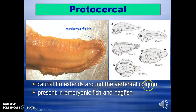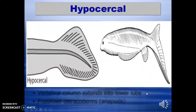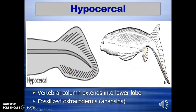Here you can see some of the types. Hypocercal is another type — here the dorsal tail lobe is short while the ventral region is extended, meaning the vertebral column extends into the lower lobe. For example, fossilized ostracoderms and anaspids show this tail type.